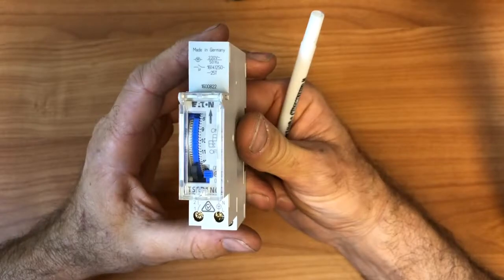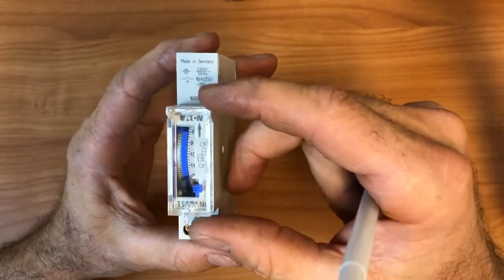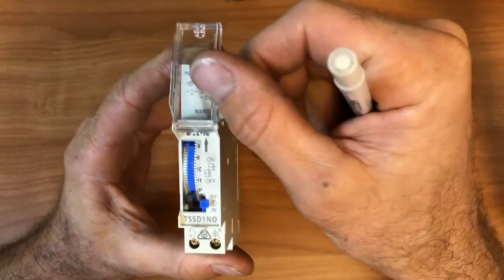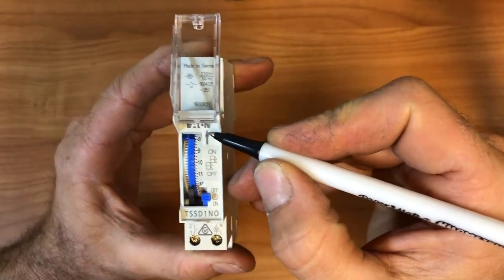So what we'll do now is just have a close look at these timers and how to set them up. So here we have an Eton timer, and we've got a little plastic cover over here that just clips up like so, and you can see it says Eton at the top here.